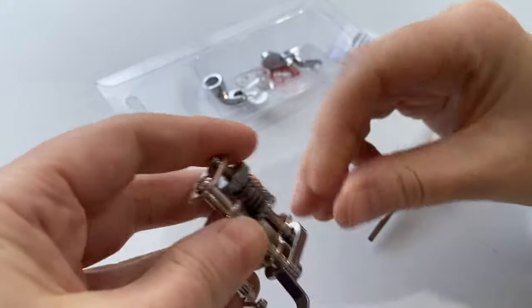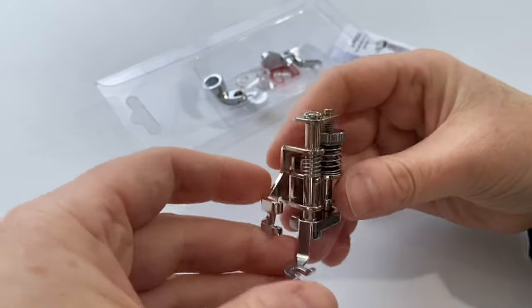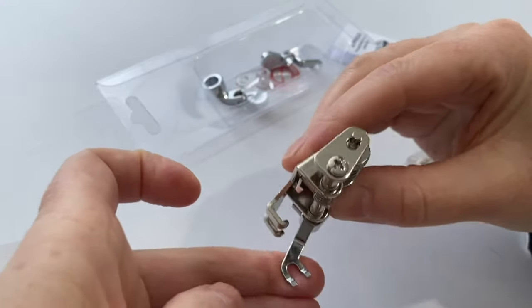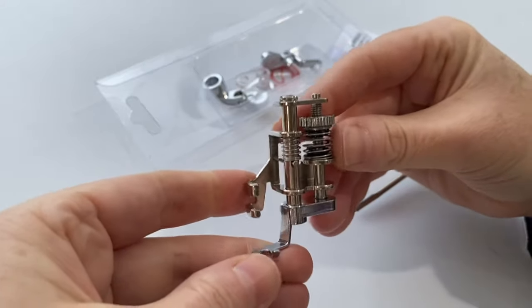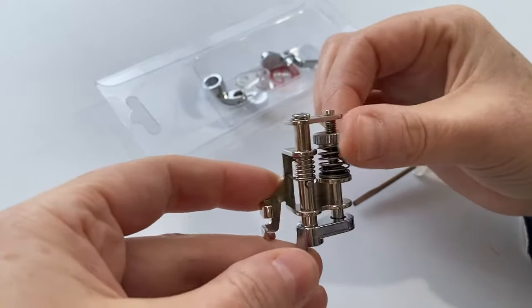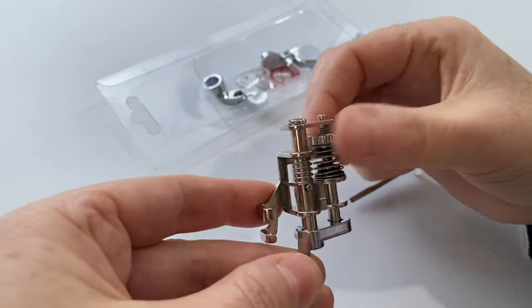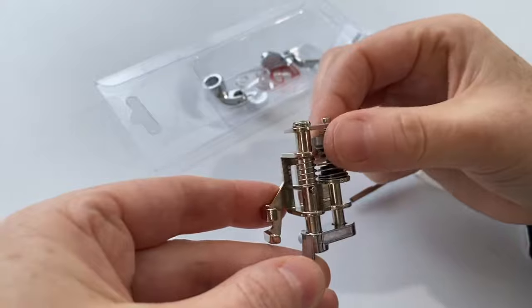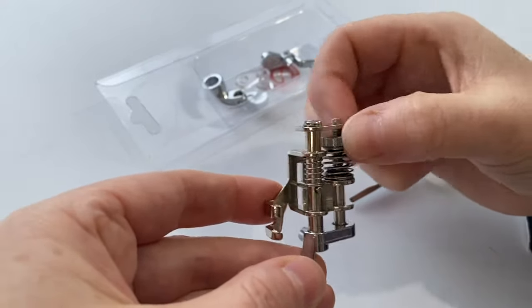Okay, so there is my darning foot. Now, you're going to put this on your machine and it may be too low and it's hard to move the fabric around underneath. So what is so amazing about this foot is you can actually adjust it with this screw here so that it goes up or down, making it longer or shorter.